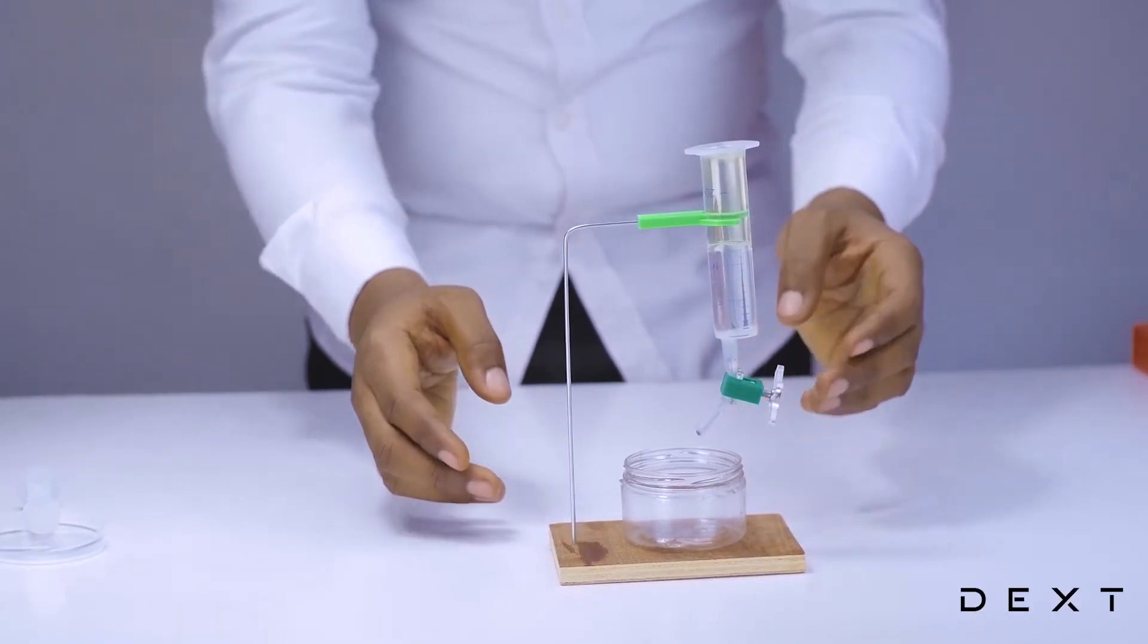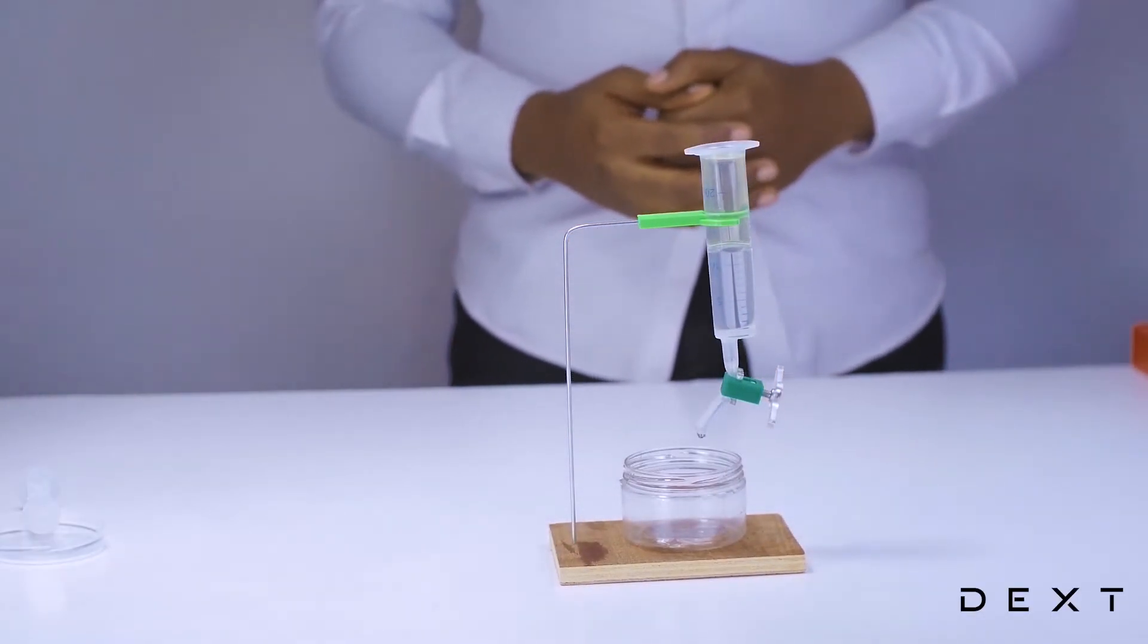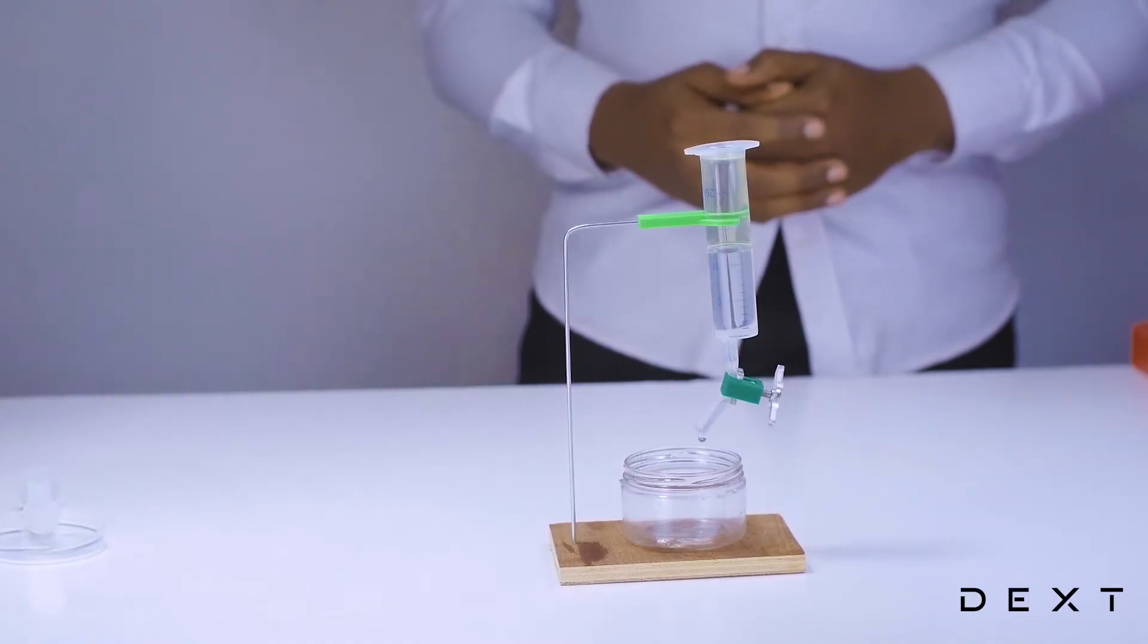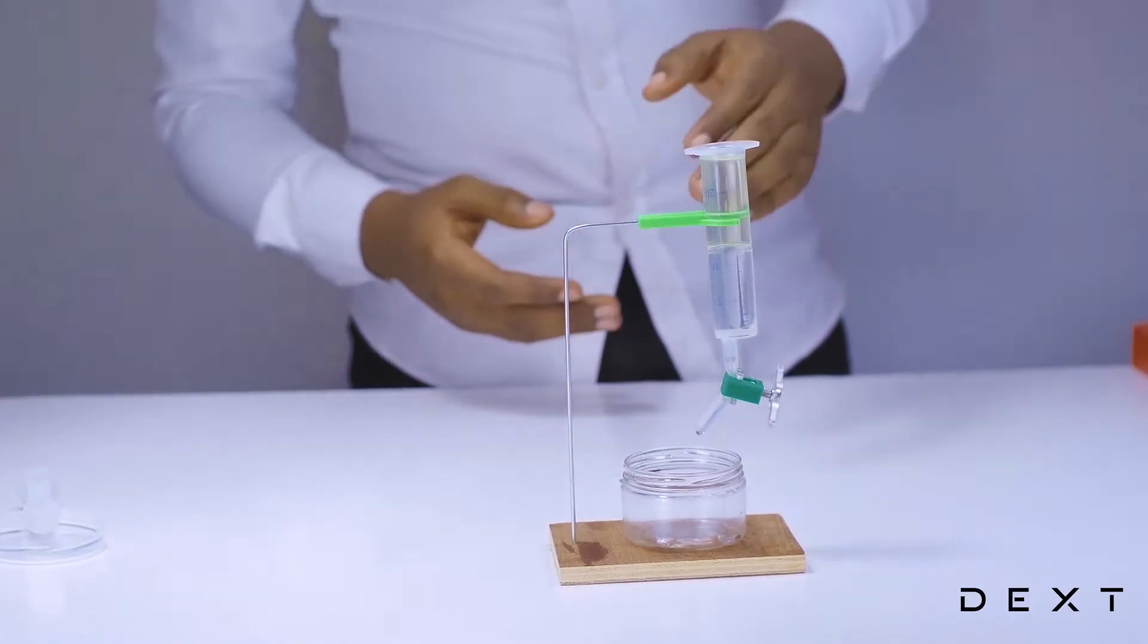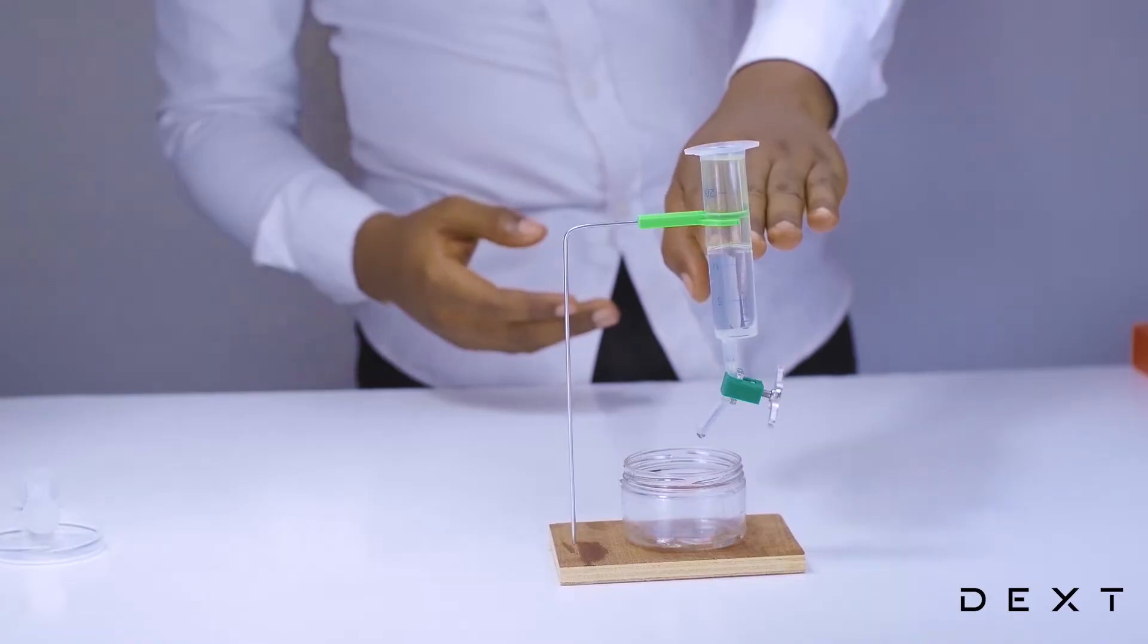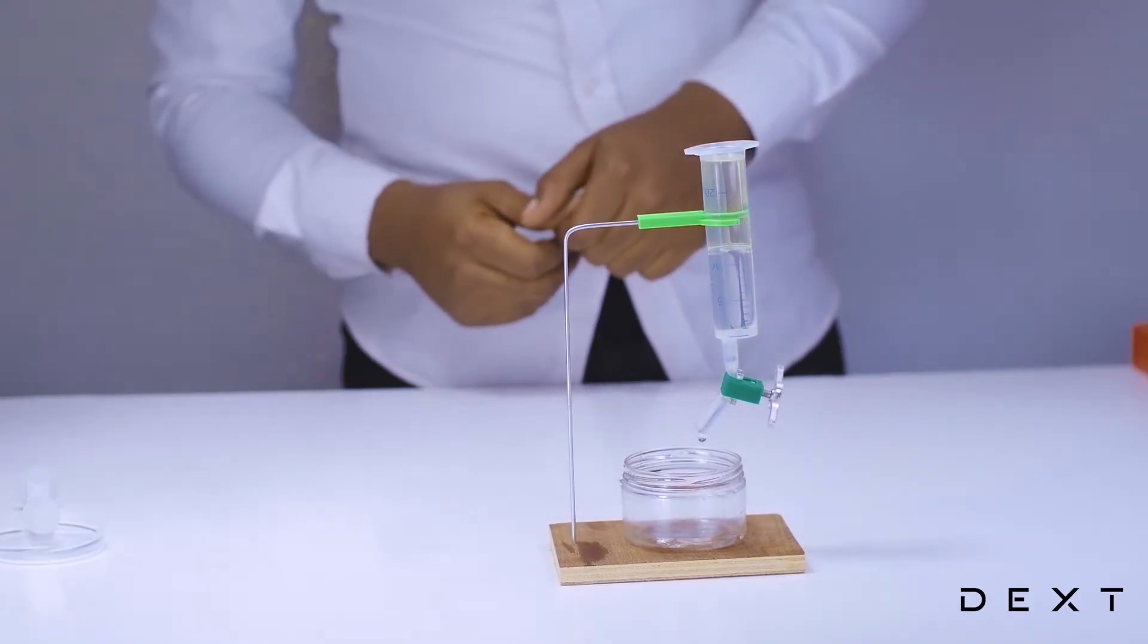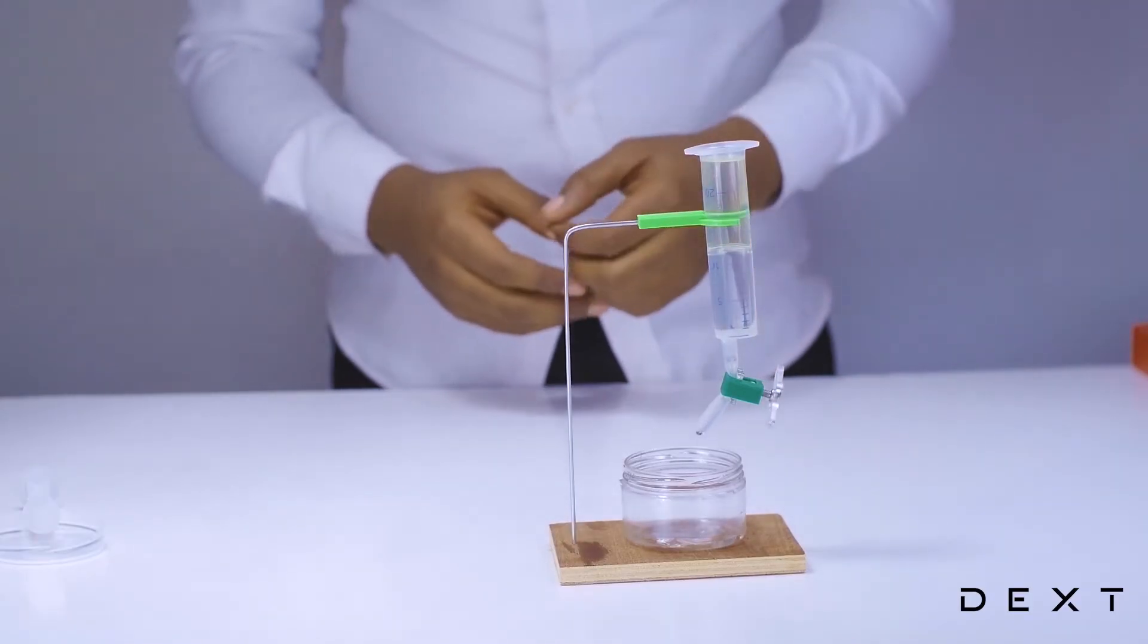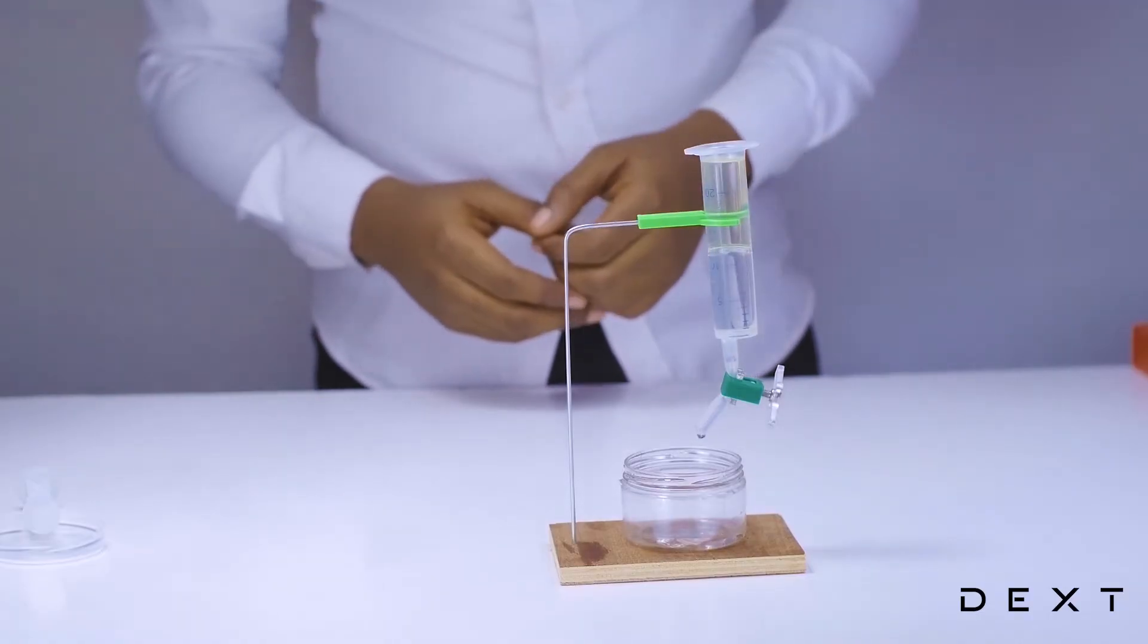You can open the tap to increase the rate at which the liquid is drained. But you can see the liquid on top slowly begins to fall as the liquid below drains.